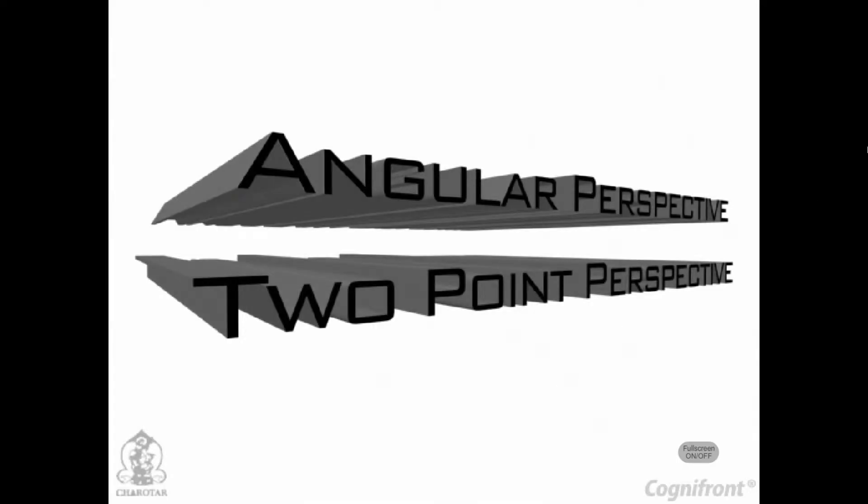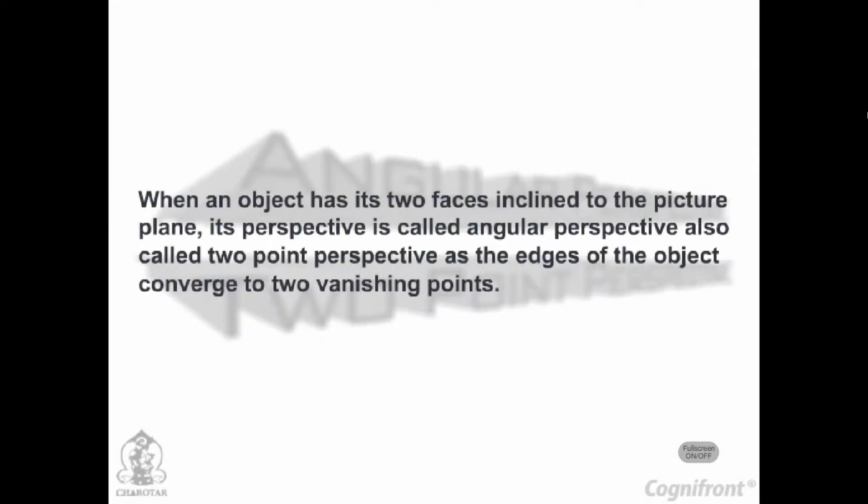Angular Perspective or Two-Point Perspective: When an object has its two faces inclined to the picture plane, its perspective is called Angular Perspective, also called Two-Point Perspective, as the edges of the object converge to two vanishing points.